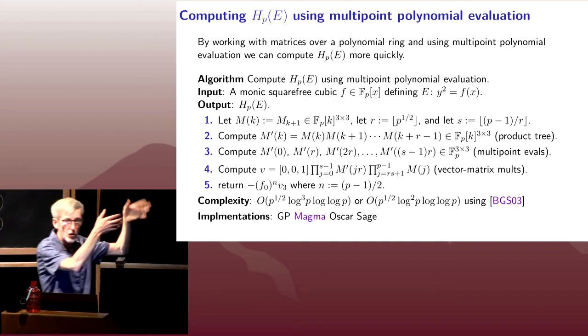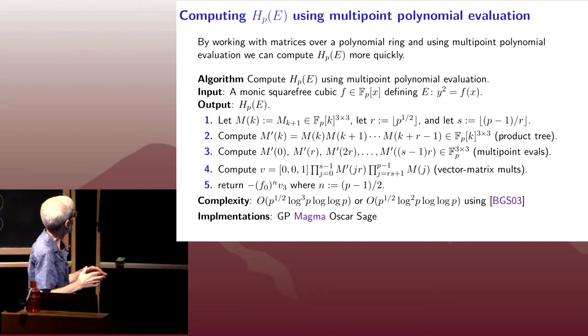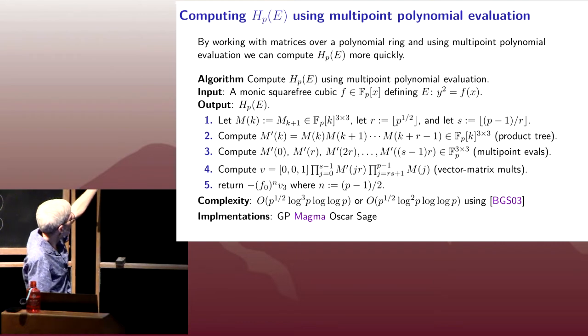Whose nine entries are polynomials of degree r. Then we're going to apply multi-point polynomial evaluation to each of those nine entries to compute m prime of 0, m prime of r, m prime of 2r, etc.